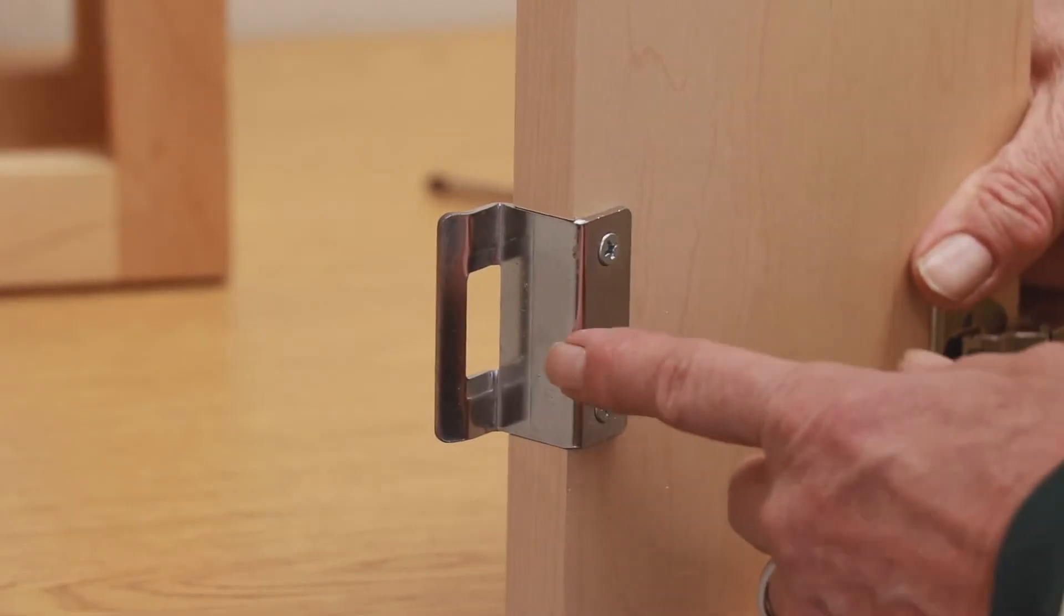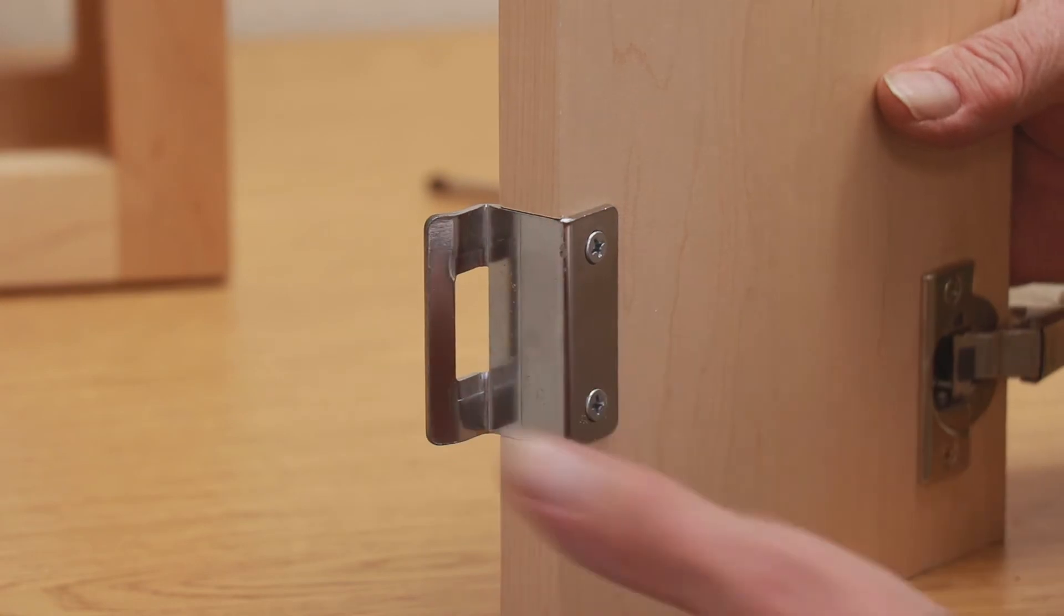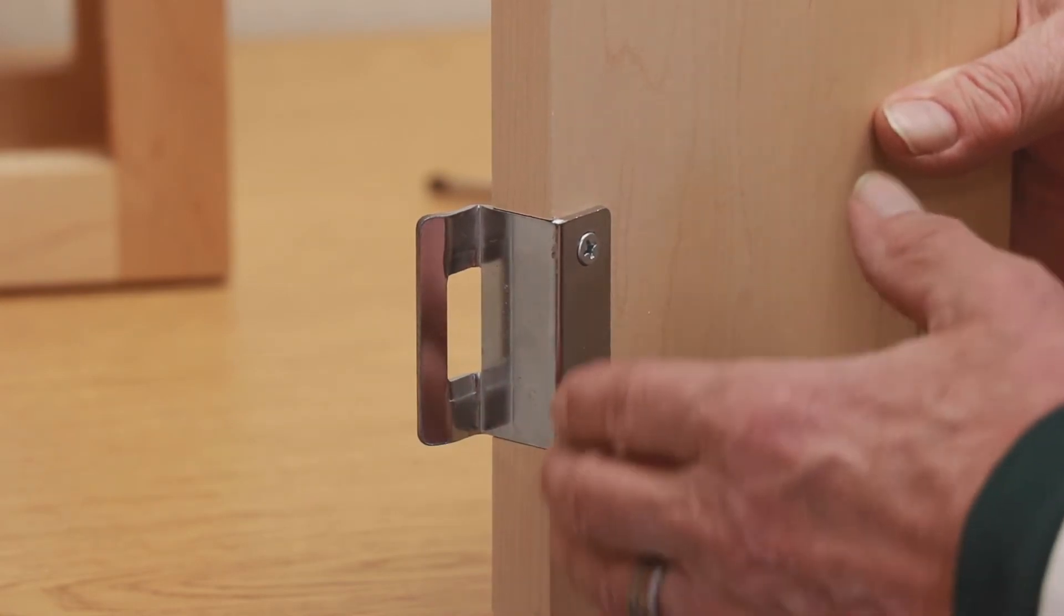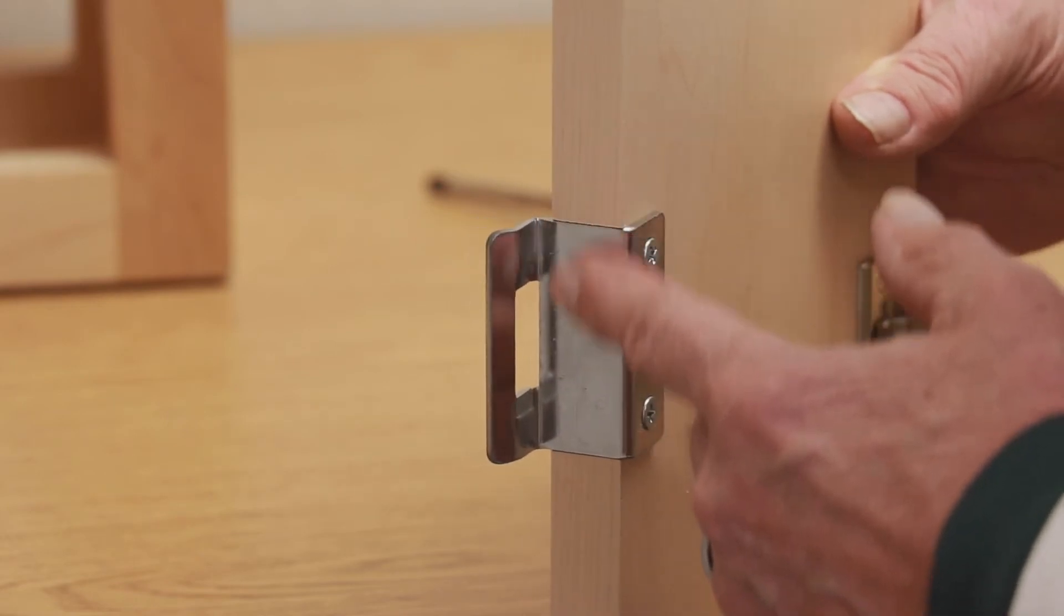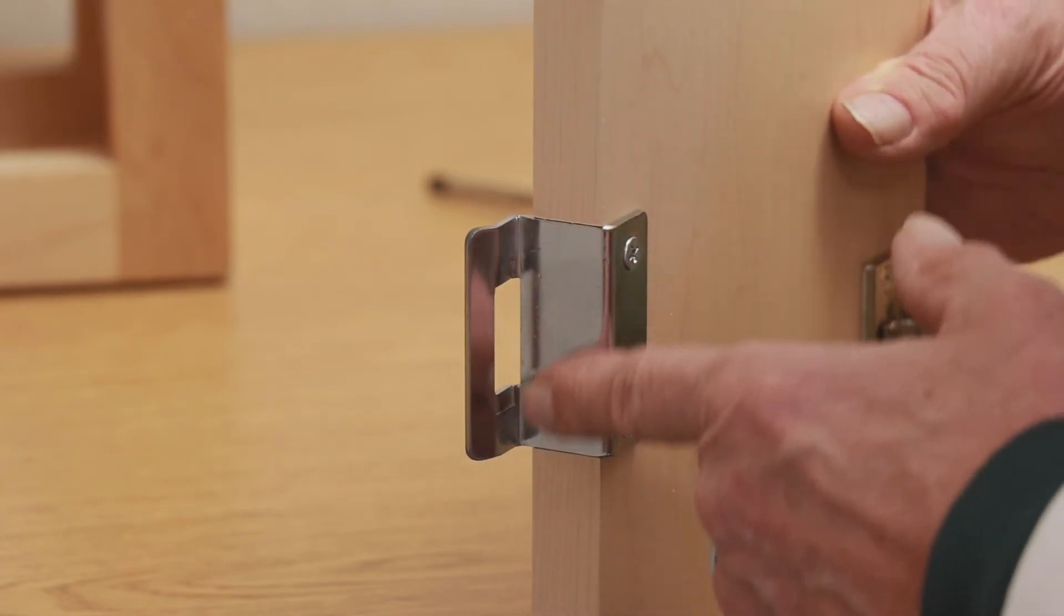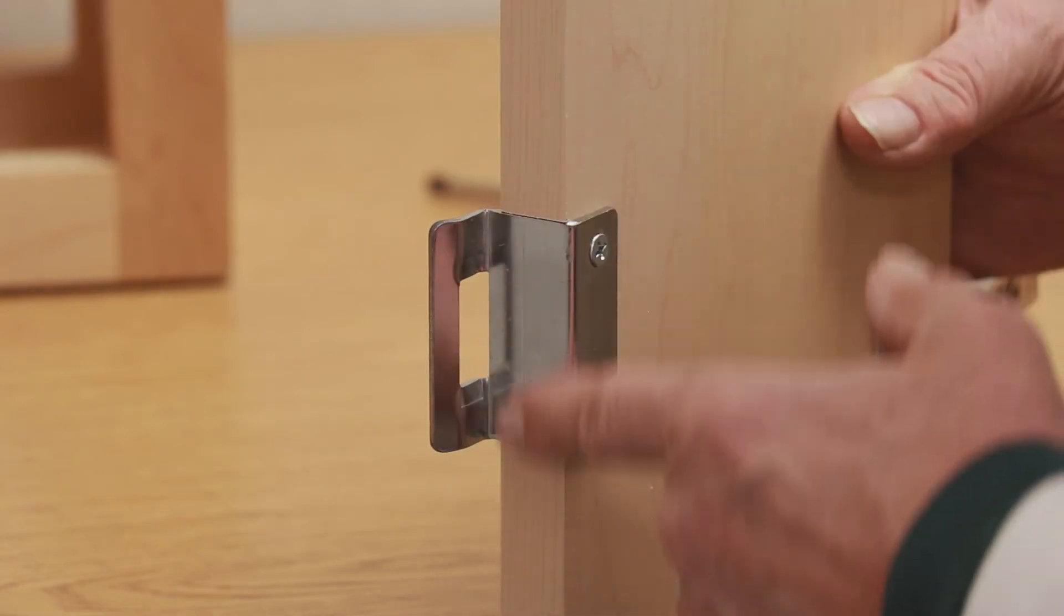Now let's look at applying the strike to the door. Just one little thing about applying the strike to the door is that the door, the edge of the door, needs to be machined so that the strike sits flush with the edge of the door.